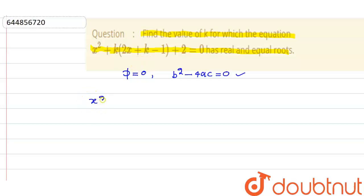plus 2kx + k² - k + 2 = 0. This is the quadratic equation we have.